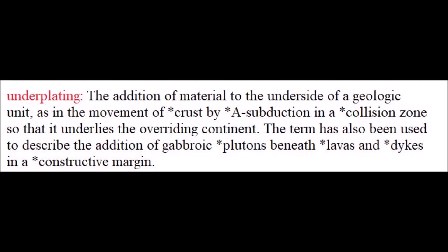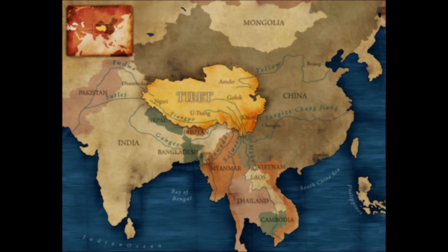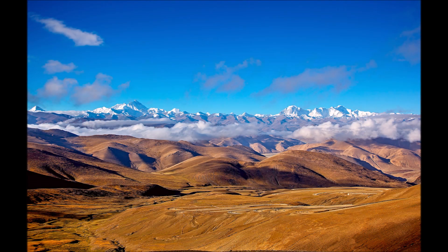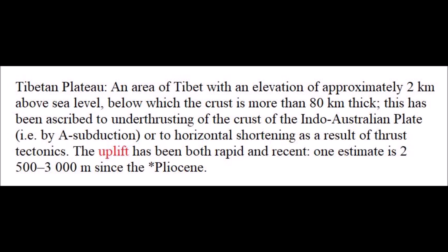A similar term is under-plating, although its meaning is totally different — under-plating means the addition of material to the underside of a geologic unit. A classical example of under-thrusting is from the Tibetan Plateau, which has an elevation of approximately 2 km above sea level and a crust about 80 km thick. This is ascribed to the under-thrusting of the Indo-Australian plate crust, or to horizontal shortening from thrust tectonics.